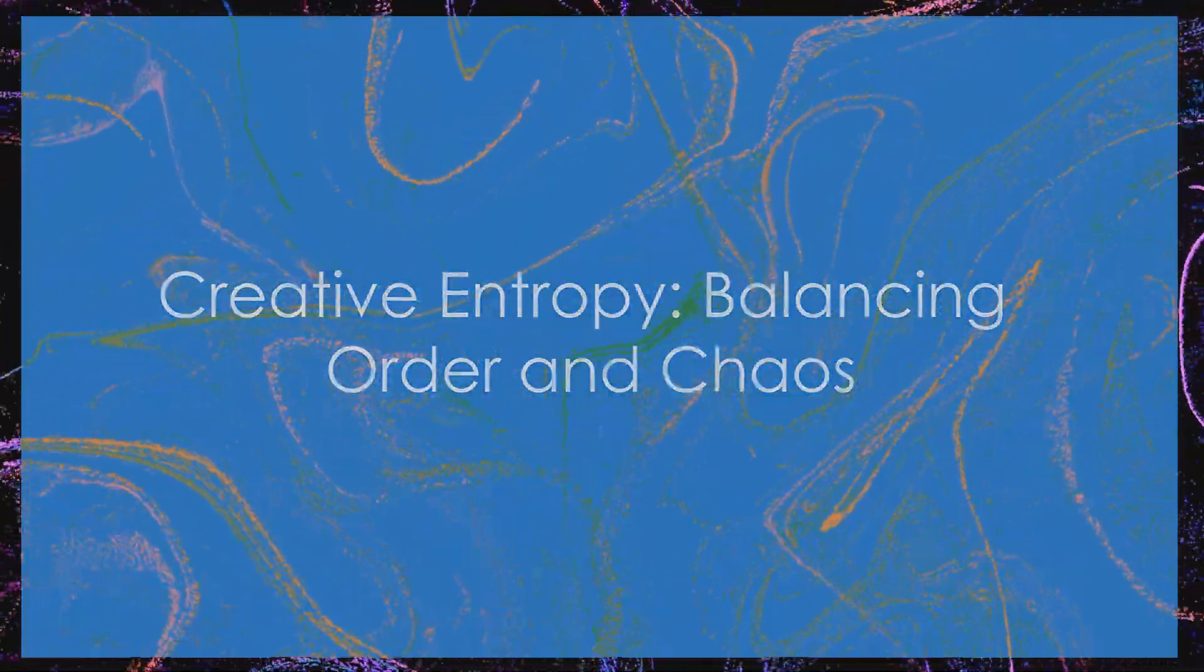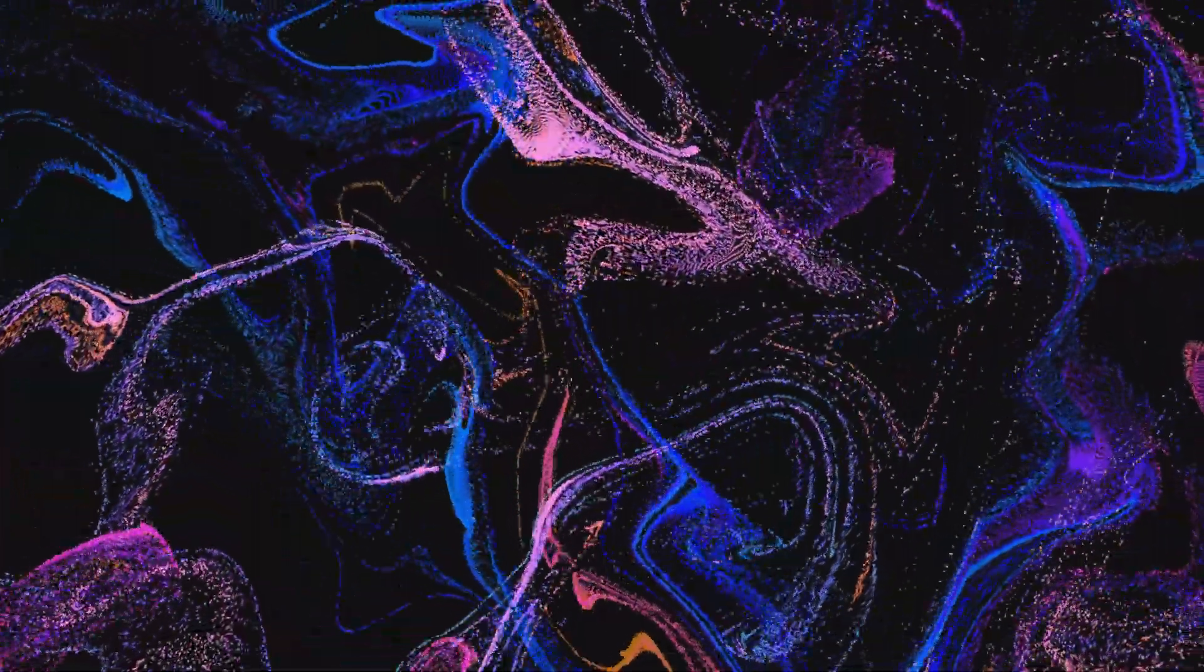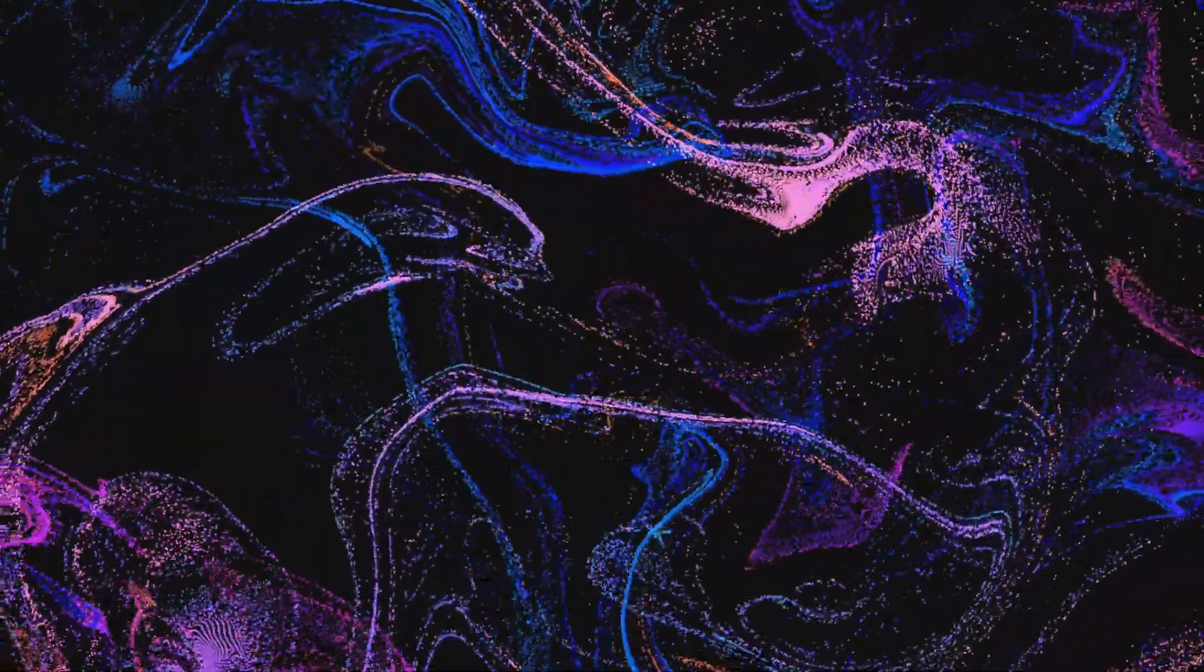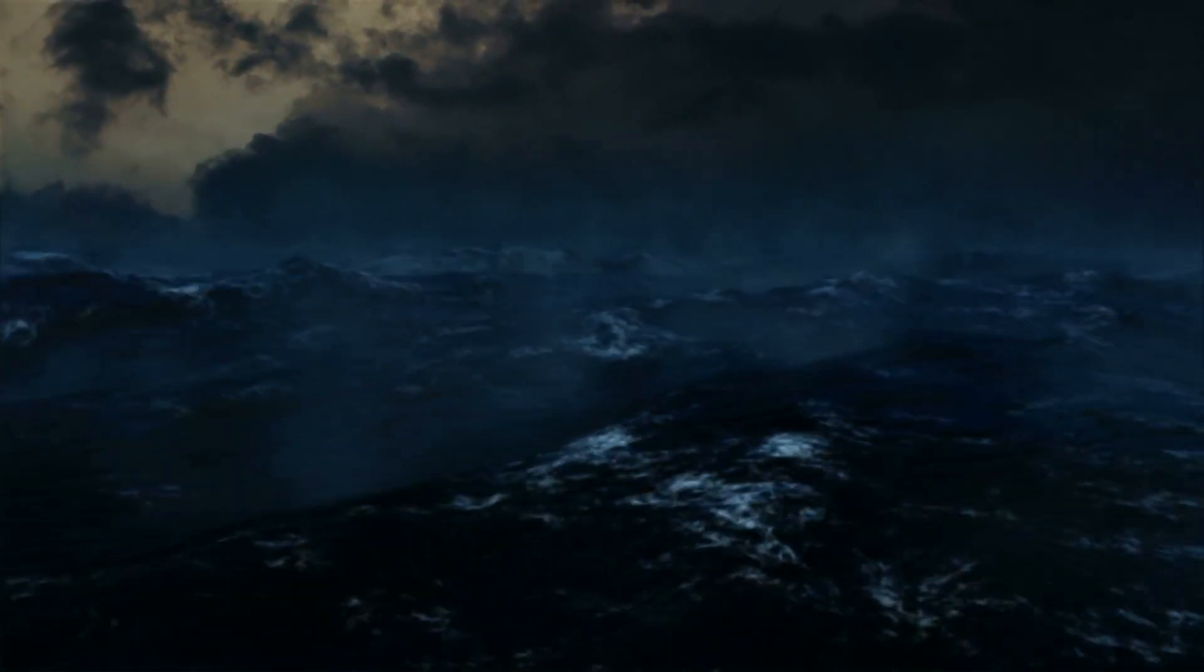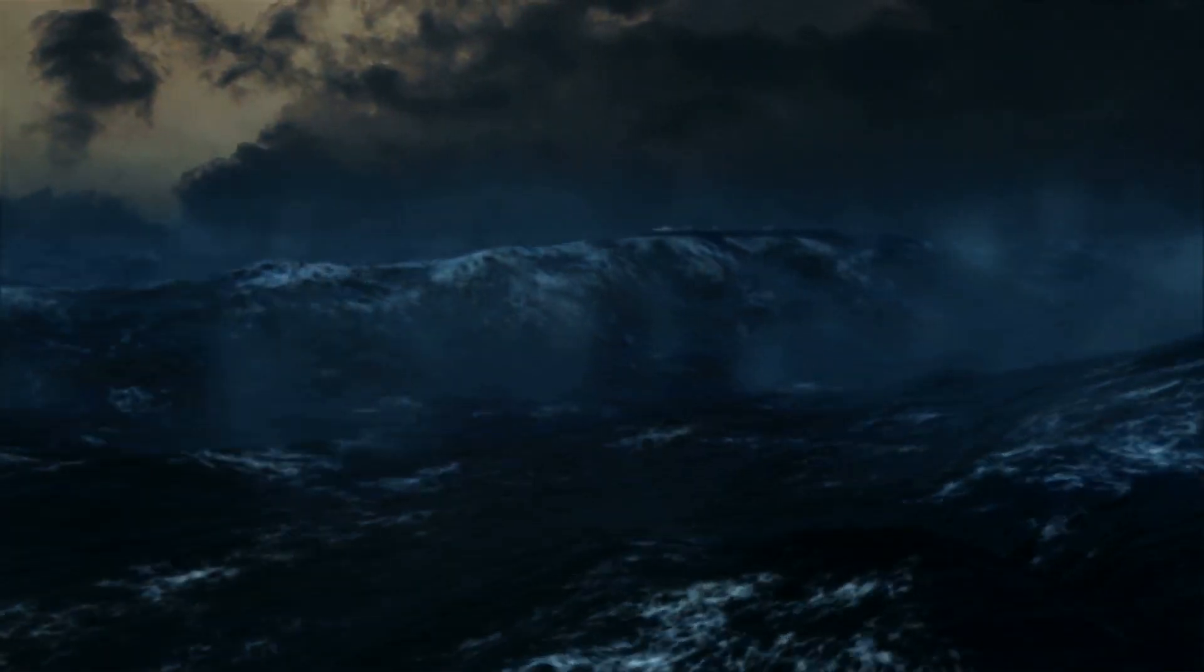In thermodynamics, entropy measures the degree of disorder in a system. Too little entropy, and everything is rigid and predictable. Too much entropy, and it's pure chaos with no recognizable structure. Creativity thrives where order and chaos meet, perched right at the edge of uncertainty.